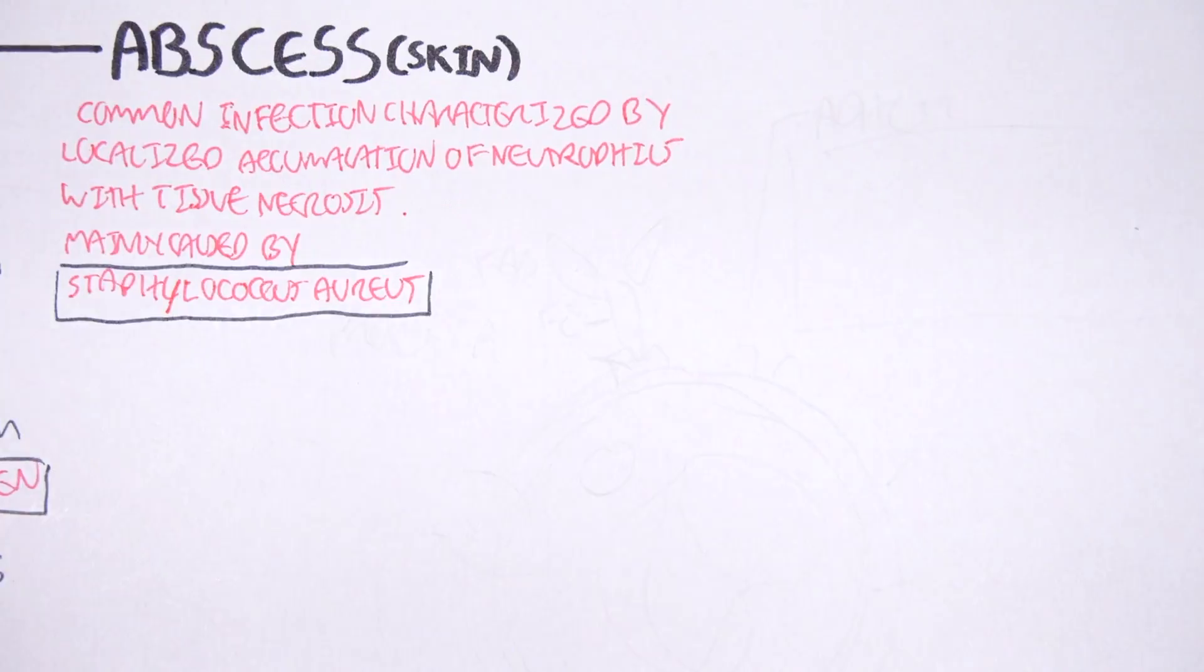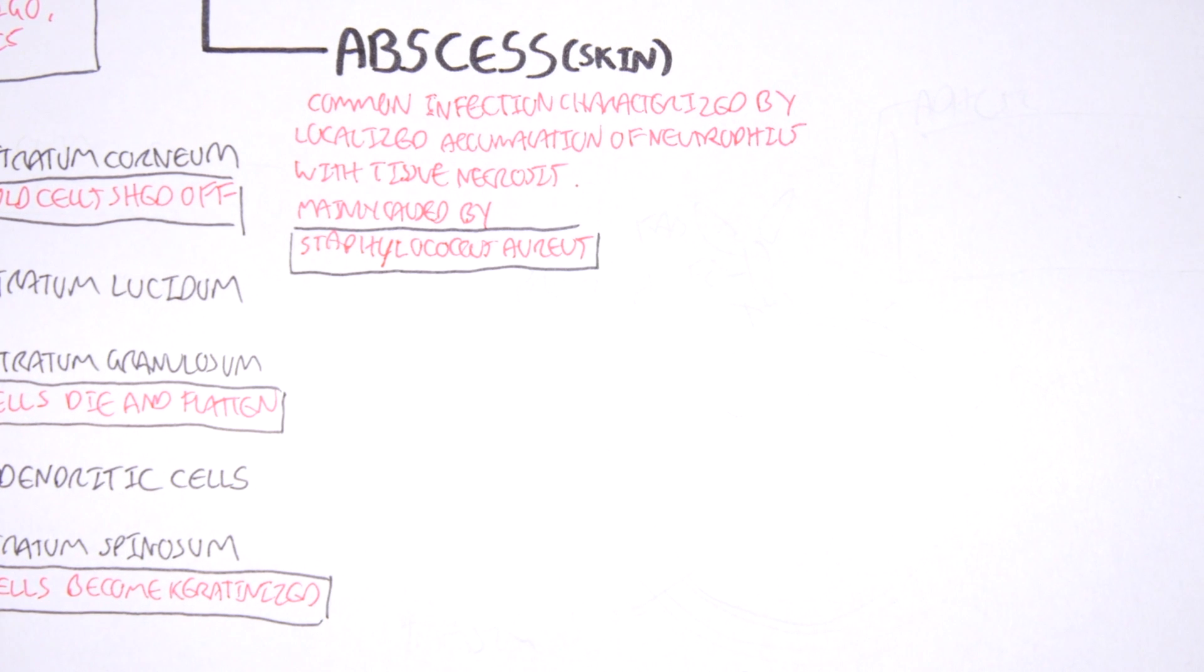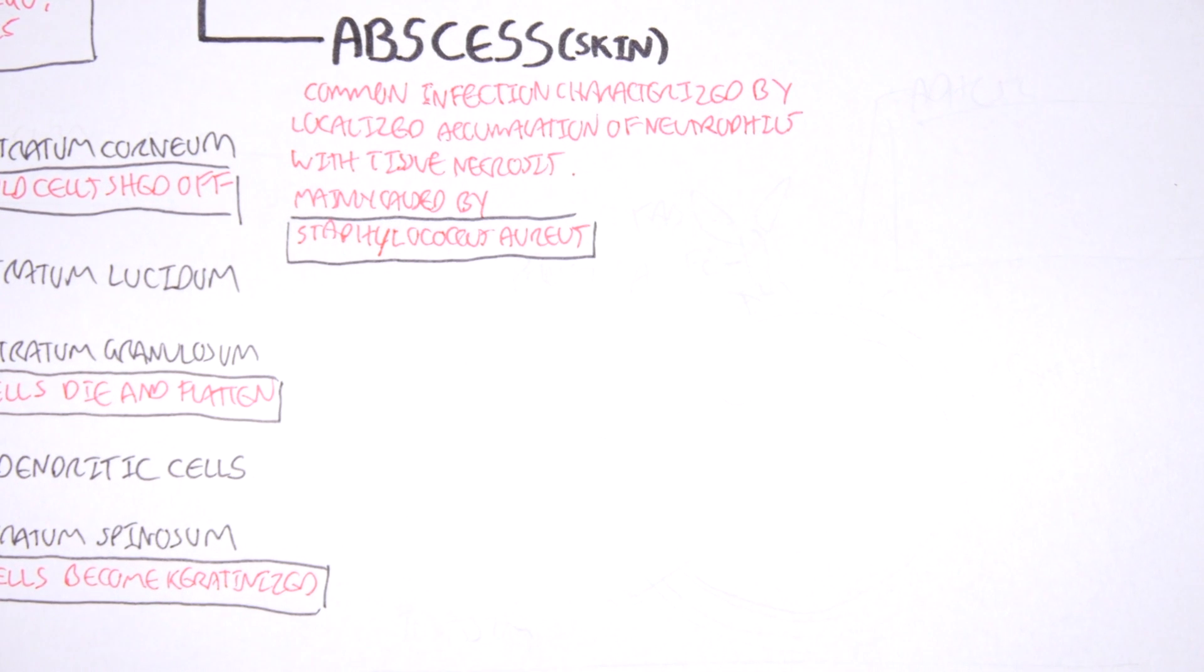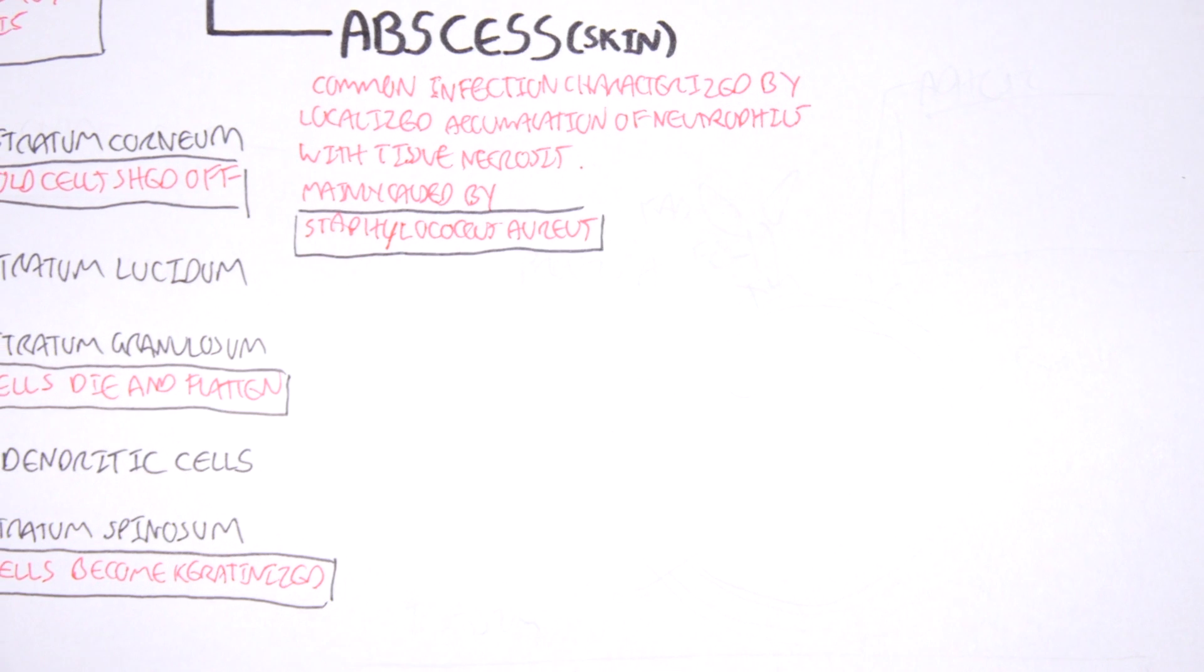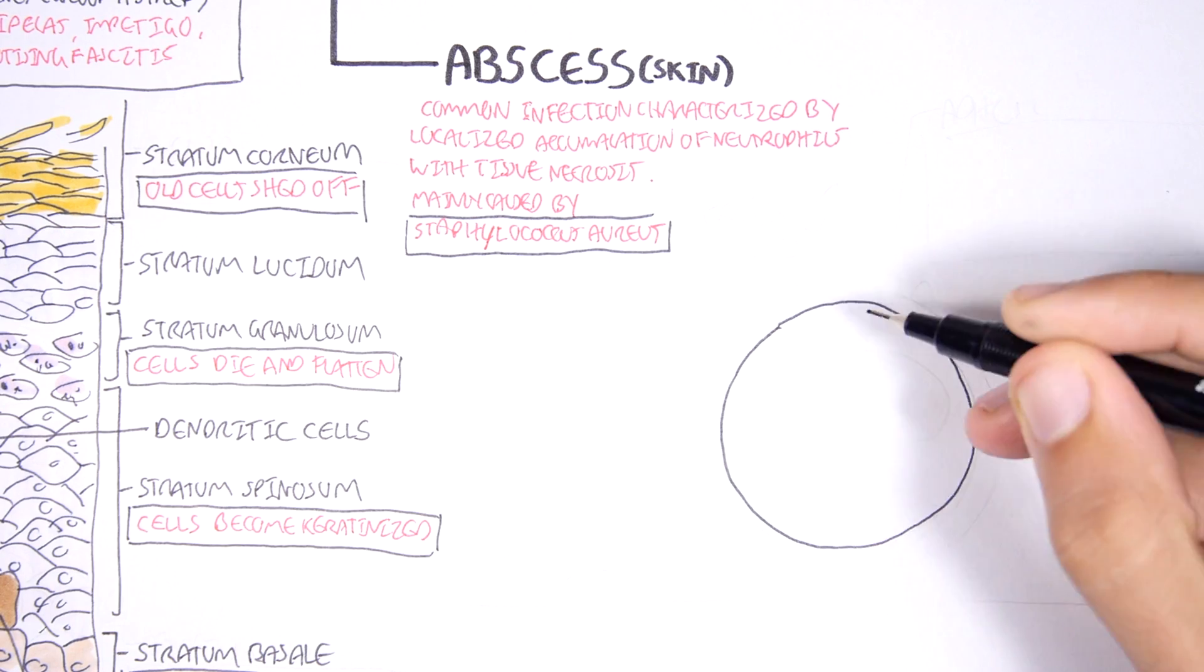Before we look at the pathophysiology or pathogenesis of an abscess of the skin, we have to first understand the bacteria Staphylococcus aureus, or at least to some extent. Staphylococcus aureus is a commensal pathogen in our body, on our skin especially.